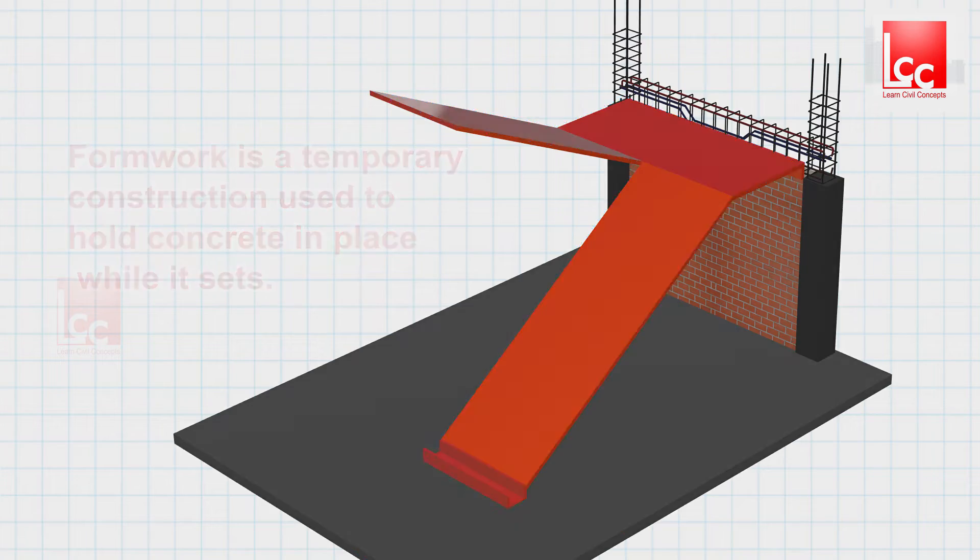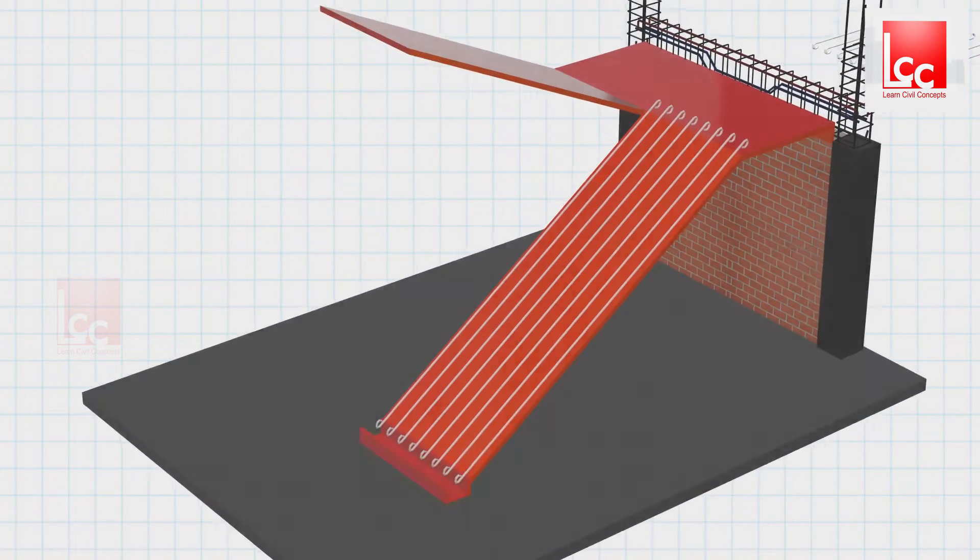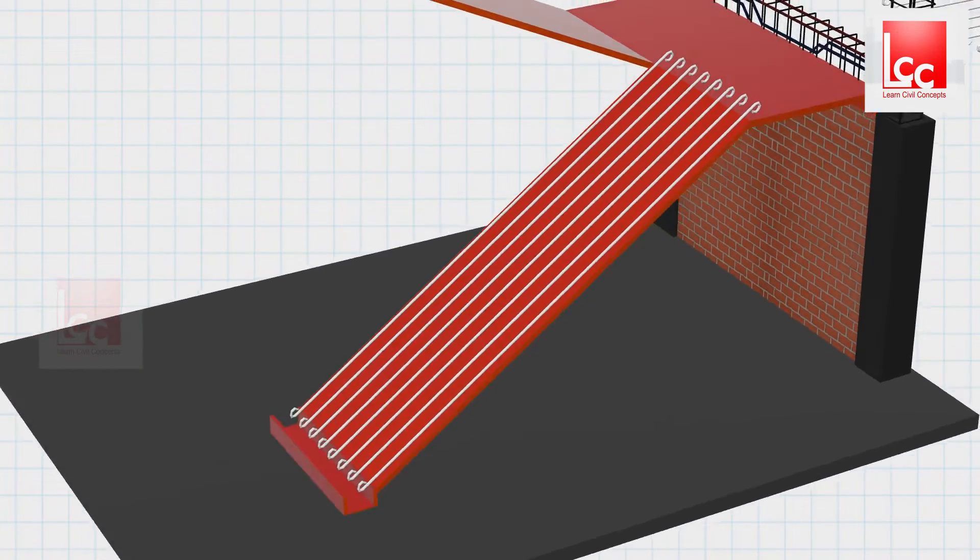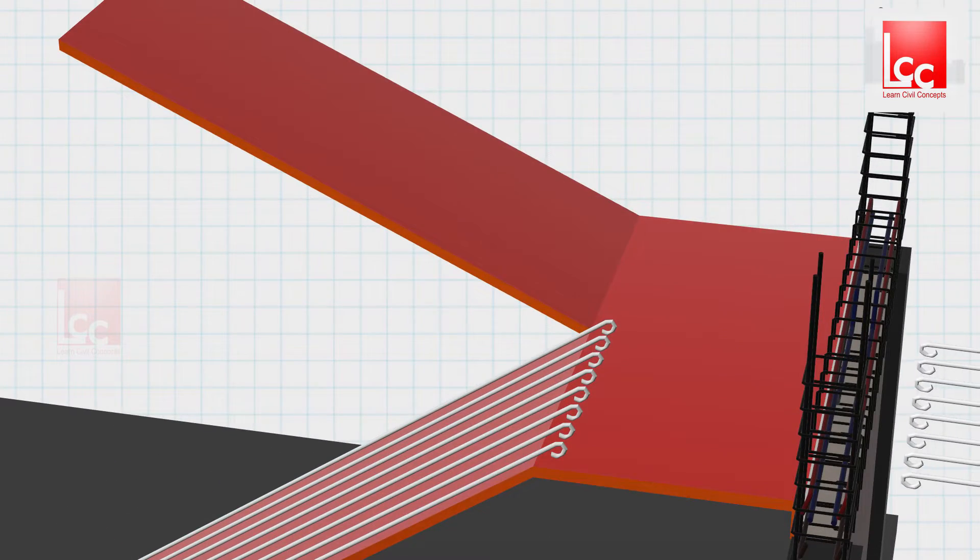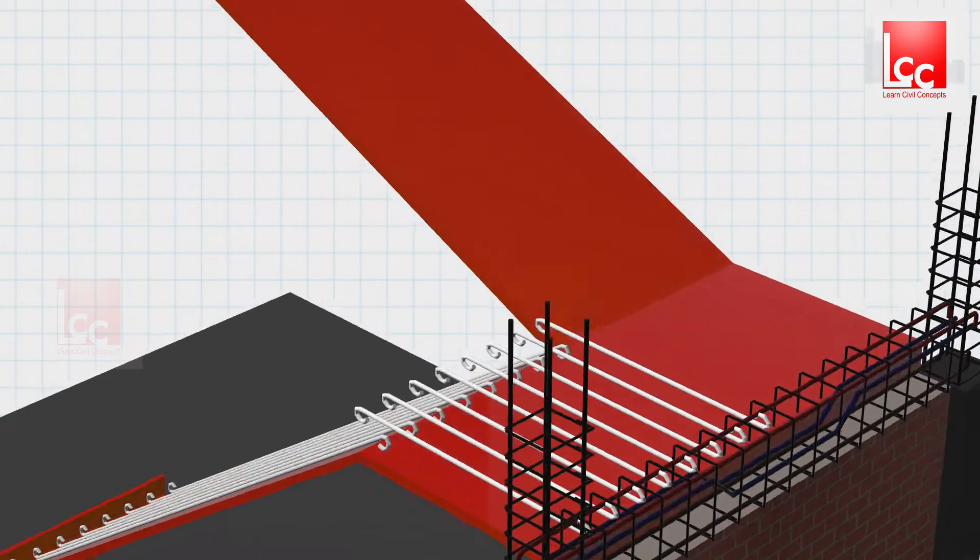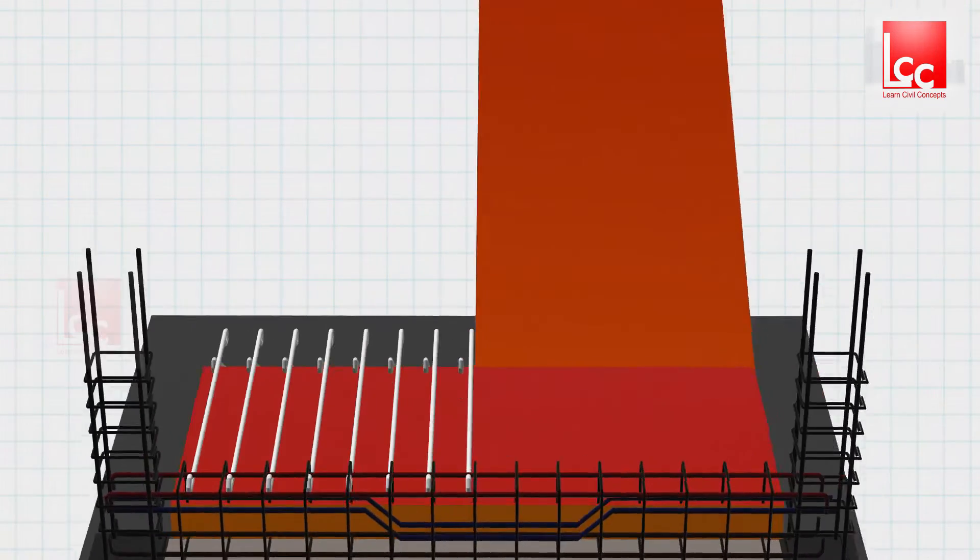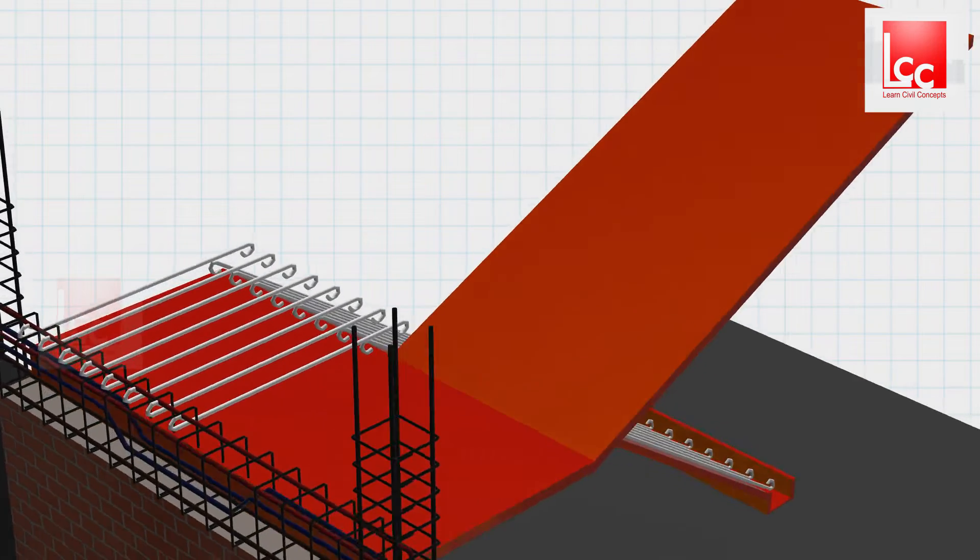We will start laying the bottom main bar of diameter 12mm with center-to-center spacing of 200mm. At the joint portion, we will provide overlapping. Similarly, we will provide the main bars of diameter 12mm as shown in the model.